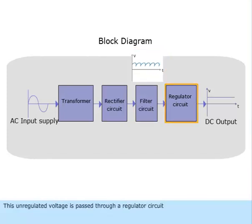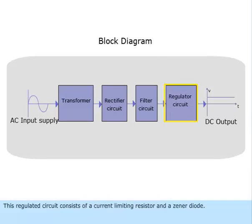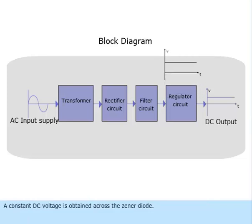This unregulated voltage is passed through a regulator circuit. This regulated circuit consists of a current limiting resistor and a Zener diode. A constant DC voltage is obtained across the Zener diode.